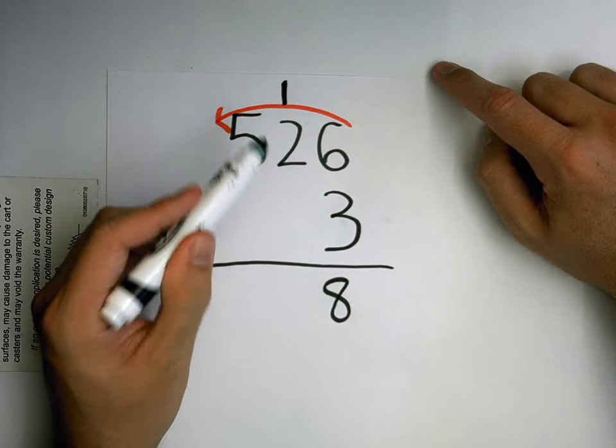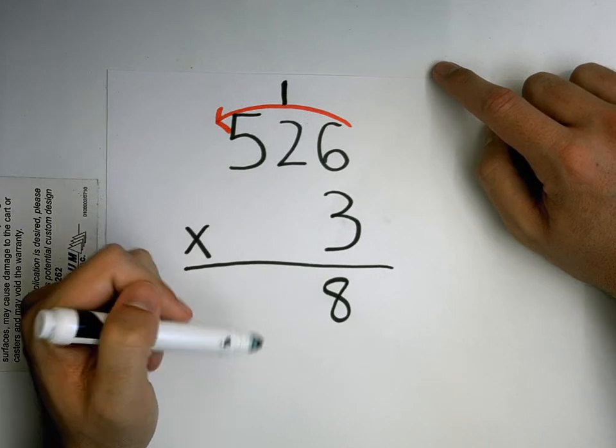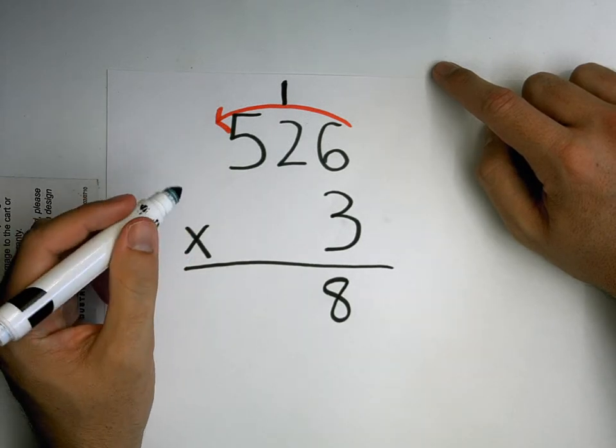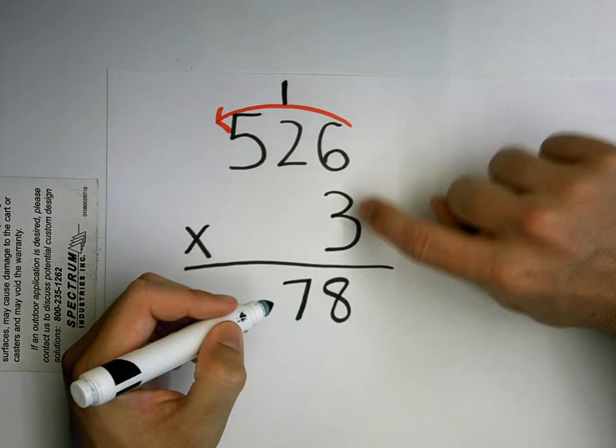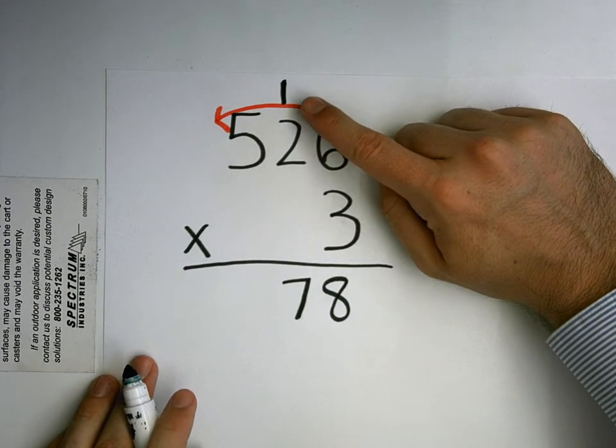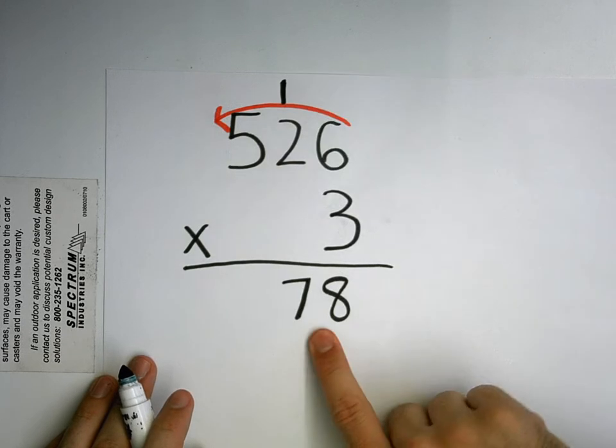What is 3 times 2 plus 1, Leanne? 7, that's right. Because 3 times 2 is 6, plus 1 is 7. So I have my 7.